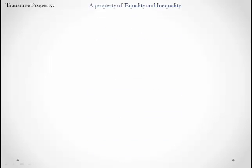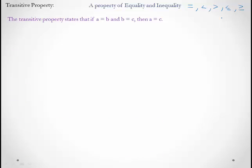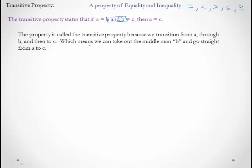Transitive property. The word transitive means transition. The transitive property is a property of equality or inequality. It says that if A = B and B = C, then A = C. Basically, with the transitive property we cut out the middleman. It's called the transitive property because we transition from A through B and then to C — we take out the middleman and go straight from A to C.